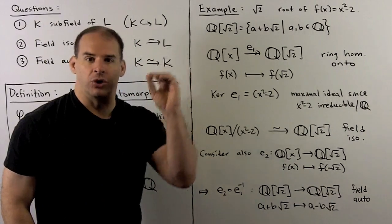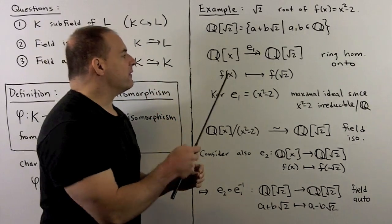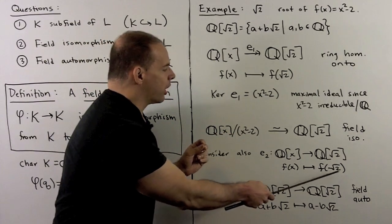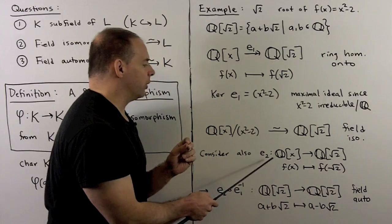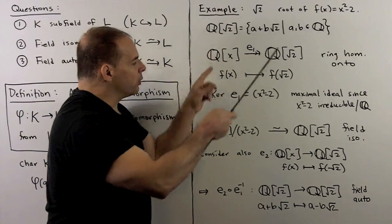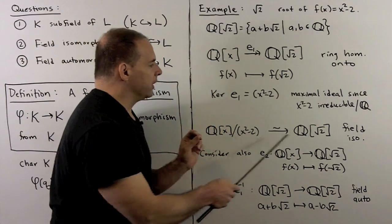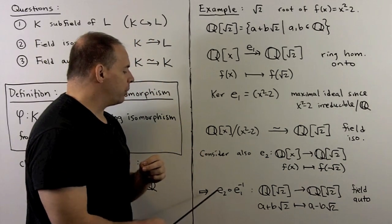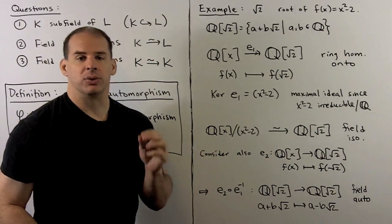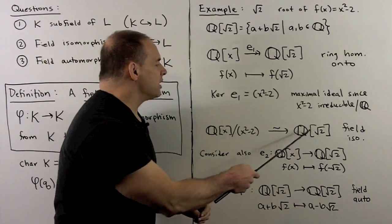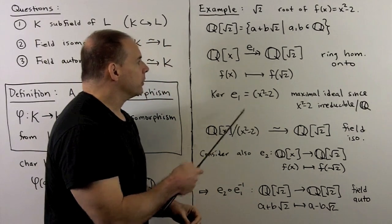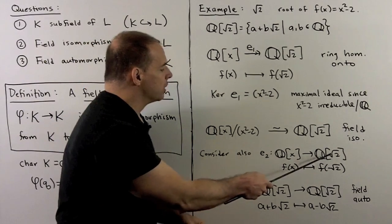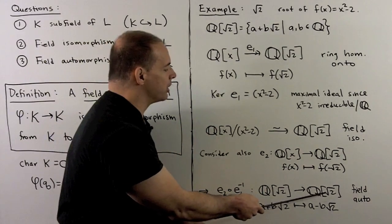We could develop this in a different direction: instead of evaluating at √2, we evaluate at −√2. Call this e₂. Everything runs the same and we get a field isomorphism. Now consider e₁⁻¹ composed with e₂. We run the first isomorphism backwards, then run e₂ forwards. This carries Q(√2) to Q(√2).